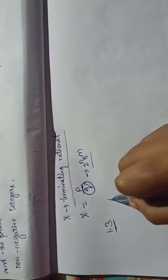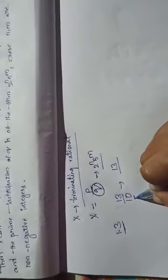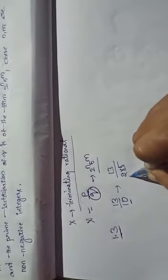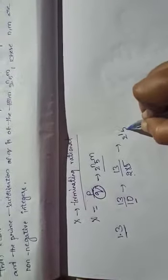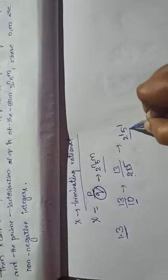1.3 is a terminating rational number. So 1.3 we can write in the form of 13 by 10. The prime factorization of 10 is 2 into 5. Here Q can be written as 2 power 1 into 5 power 1. So this is a terminating rational number.